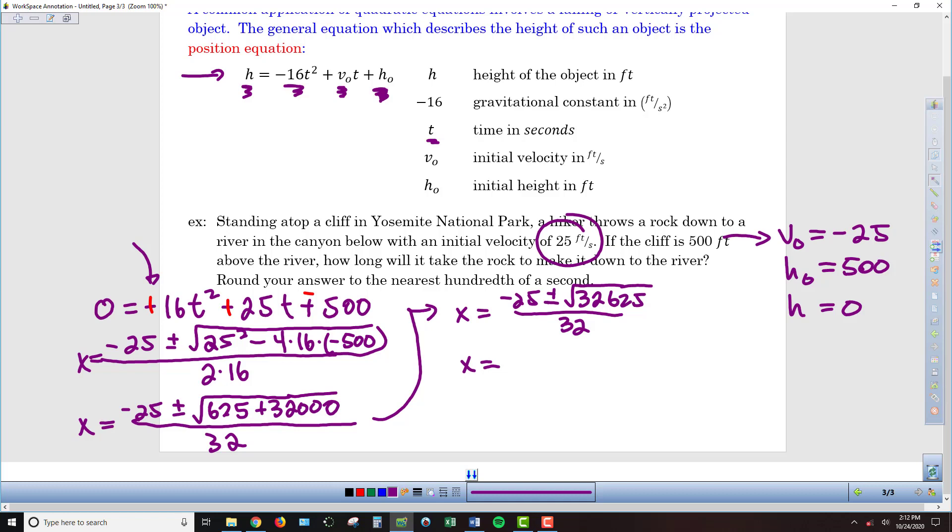So, now we're ready to break out our calculator and do the square root of 32,625. And so, if we round off to the nearest hundredth, that's what we were kind of asked to do here. I'm going to get 180.62. So, I'm just using my calculator to get that. And again, we don't want to forget that we're all over 32.